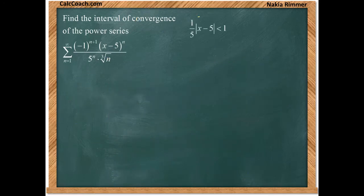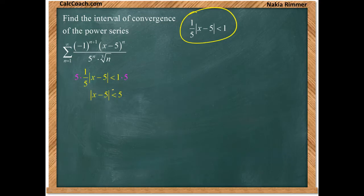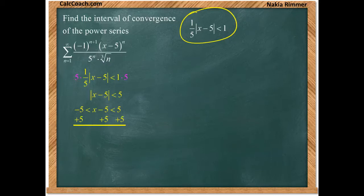We solve the inequality by multiplying both sides by 5, giving us the absolute value of x minus 5 less than 5. When an absolute value is less than some number, what's inside is between the positive and negative version of that number. We add 5 everywhere to get x is between 0 and 10.